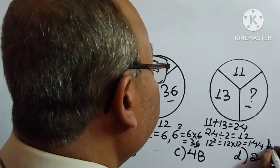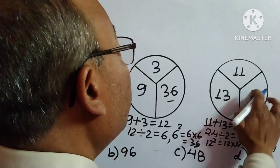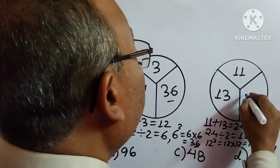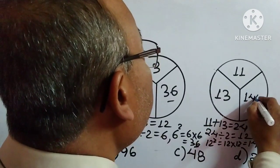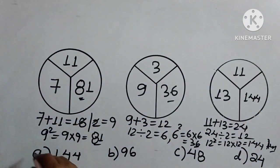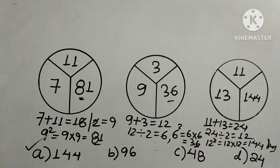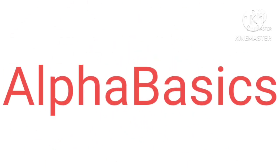So here we have to write 144. So answer is option A. That's all for today. Hope you have understood. Thanks for watching.